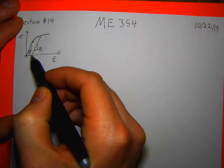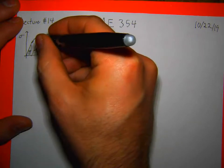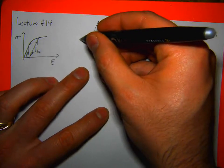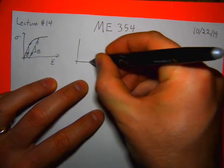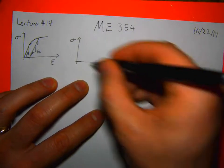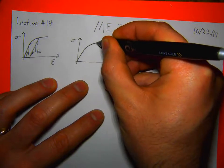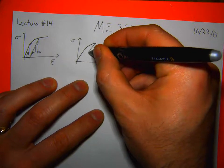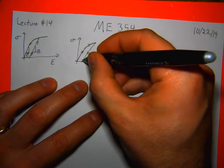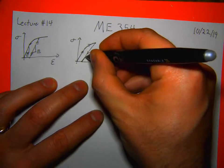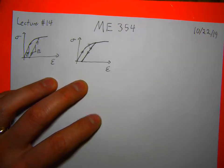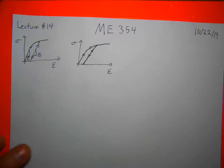If you were to unload partway through, you would get an elastic response back down with the same slope as your initial slope — the same Young's modulus. So you have plastic deformation followed by elastic unloading. If you were to load the material back up, you would come back along that same loading line. This is a very idealized curve.